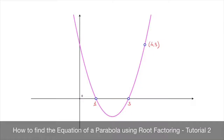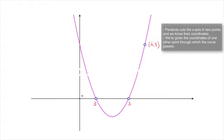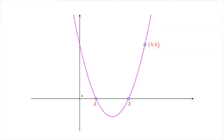In this tutorial we learn how to find the equation of a parabola using root factoring. This is our second tutorial on root factoring, and the scenario we're looking at is the following: we're given a parabola which cuts the x-axis in two points, and the x-values at which it does so are known. We also know the coordinates of one other point through which the curve passes, which isn't the y-intercept. Let's go ahead and see how to use root factoring to find this parabola's equation.